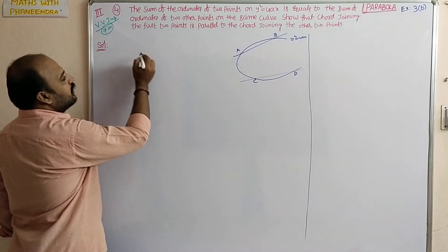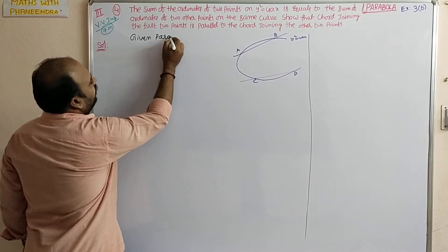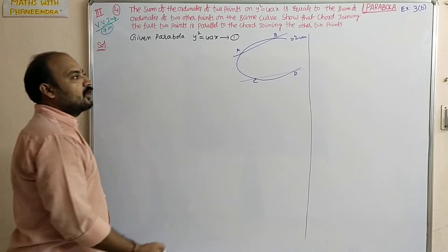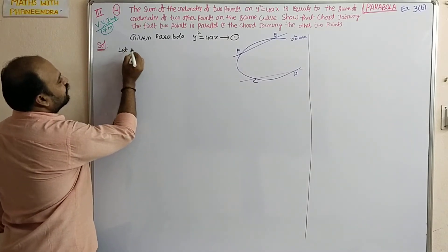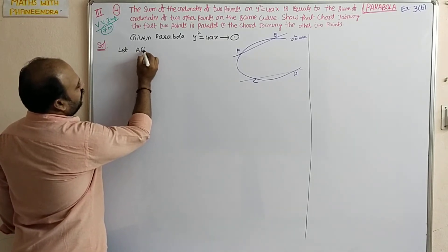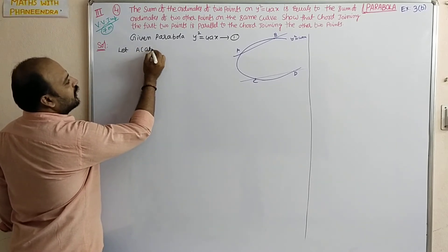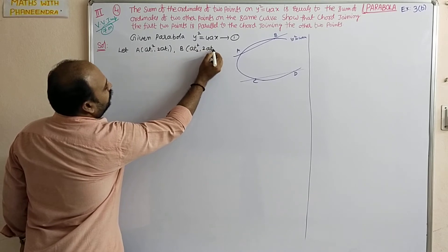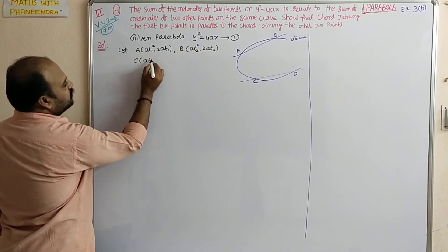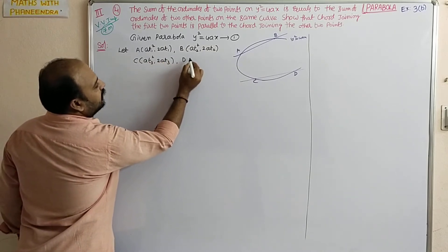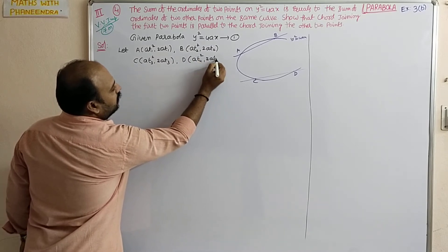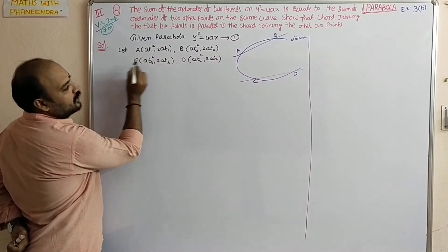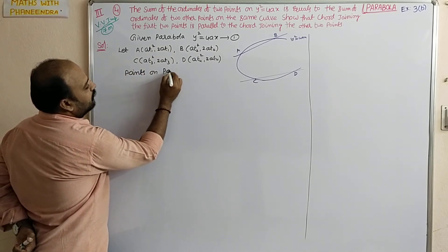First, given parabola: y² = 4x — equation number 1. Let me directly write the parametric points. A is (aT1², 2aT1), B is (aT2², 2aT2), C is (aT3², 2aT3), and D is (aT4², 2aT4). Let these be the points on the parabola.